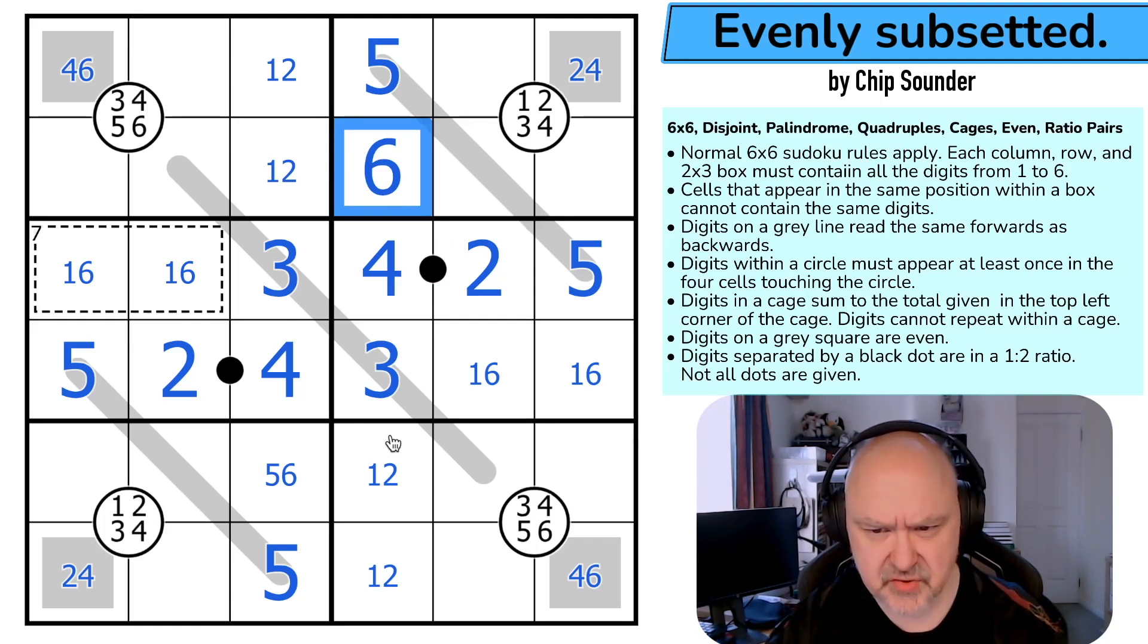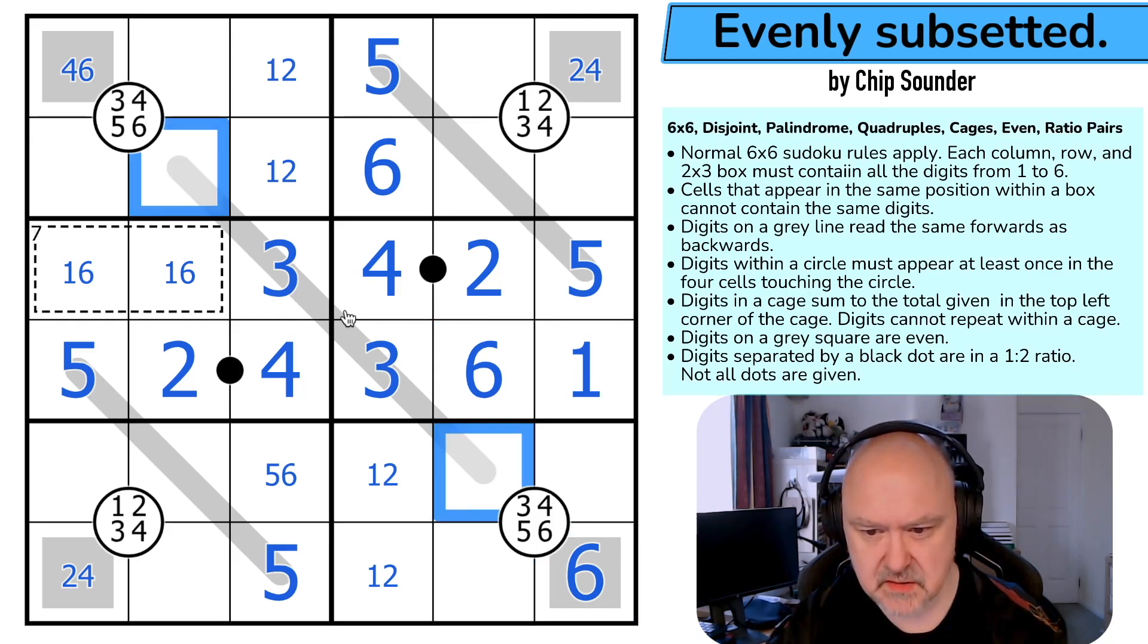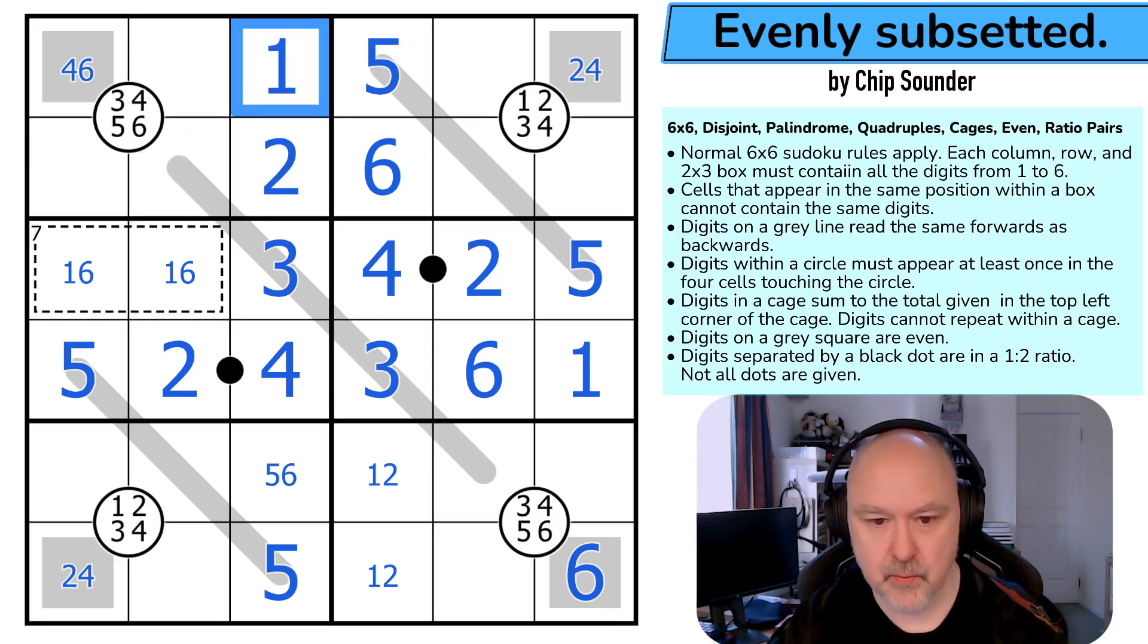Now, disjoint. Got to remember the disjoint. This 4 makes this 6. The 6 makes this 1 and this 6. But this 1 makes that 2 and that 1. Putting 1 right here.